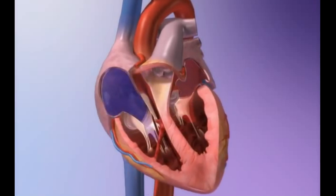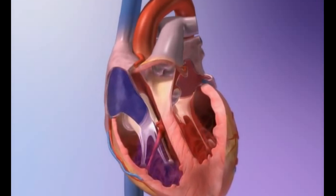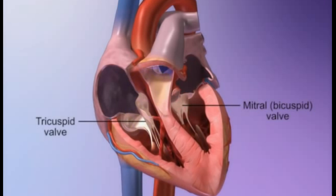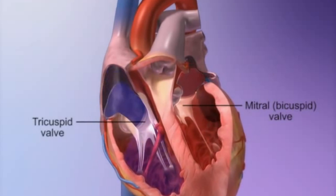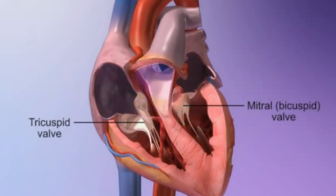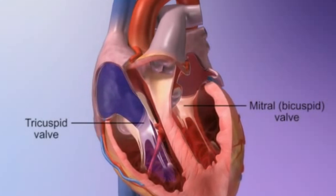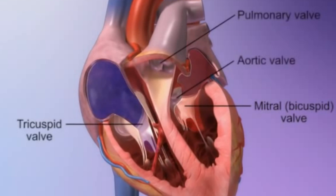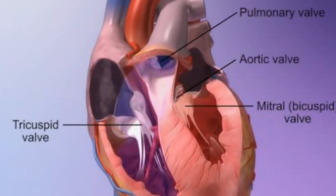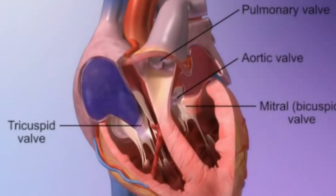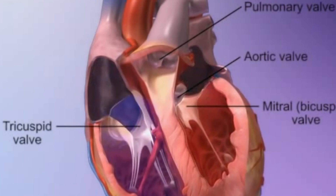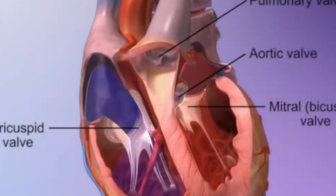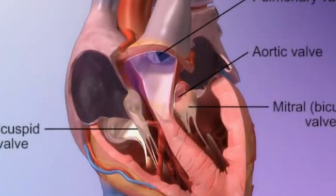Blood can flow from the atria down into the ventricles through openings in the walls that separate them. These openings are called valves — they open in one direction like trapdoors to let blood pass through, then close so blood cannot flow backwards into the atria. There are also valves at the bottom of the large arteries leaving the heart — the aorta and the pulmonary artery — to keep blood from flowing backward once it has been pumped out. The valve on the left is the mitral or bicuspid valve, and the one on the right is the tricuspid valve.